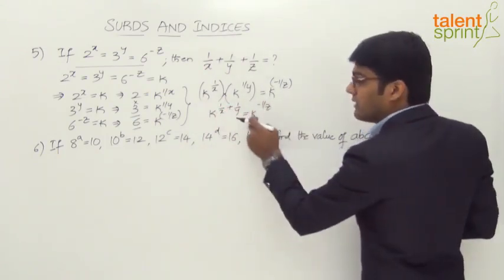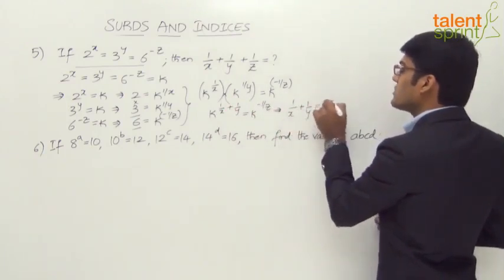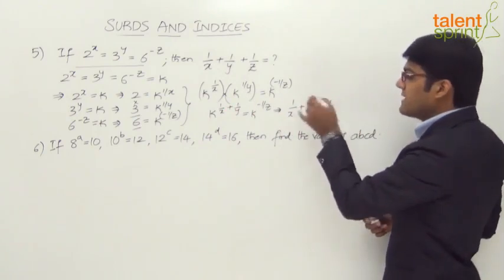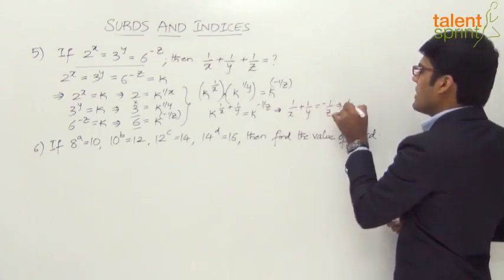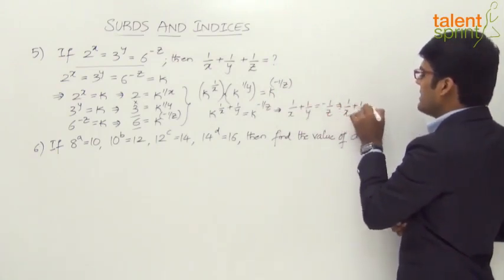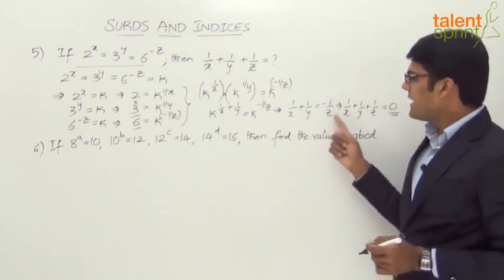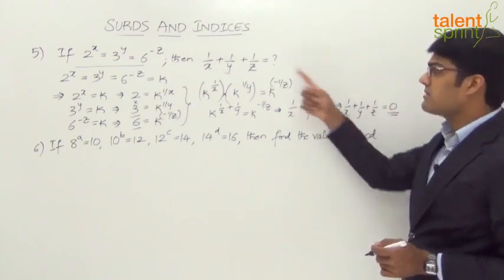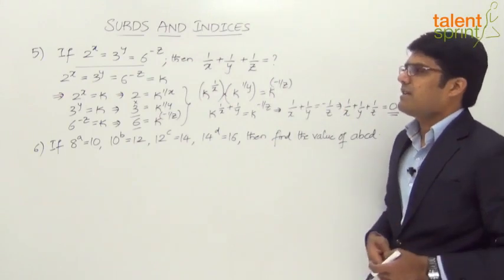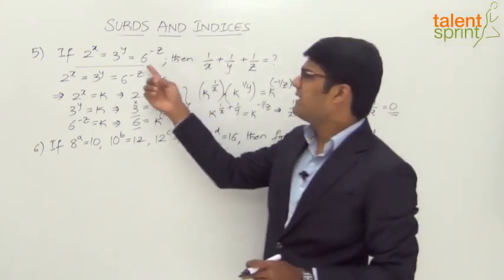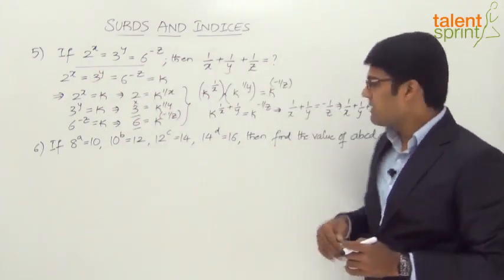When the bases are equal, the powers must be equated. So 1/x + 1/y = -1/z. Taking -1/z to the other side gives 1/x + 1/y + 1/z = 0. That's your answer. The key insight is that 6 = 2 × 3, so we multiply the first two equations to obtain the given expression.